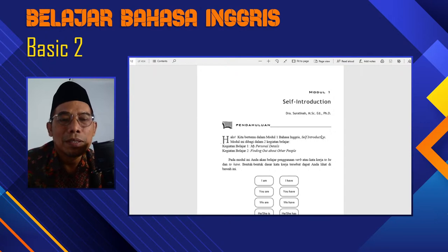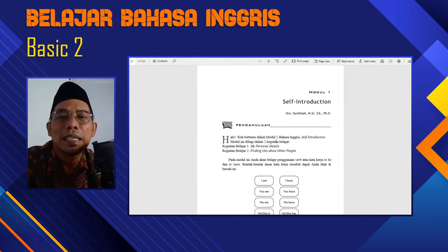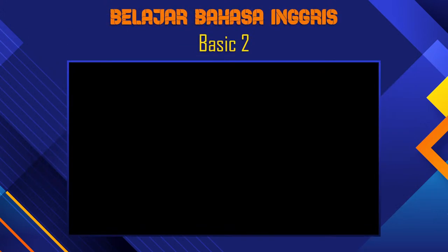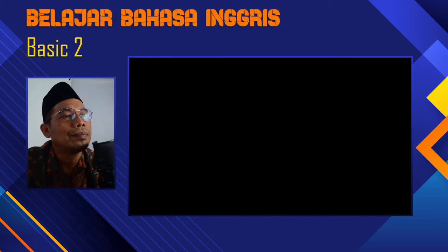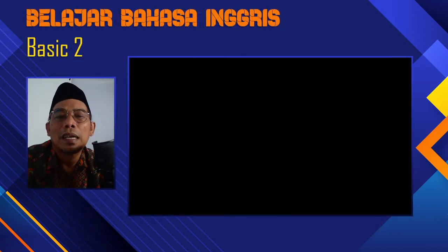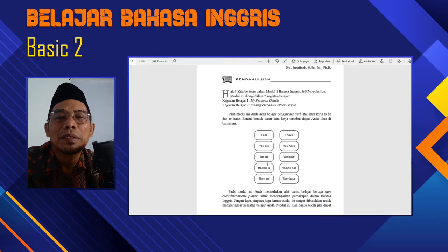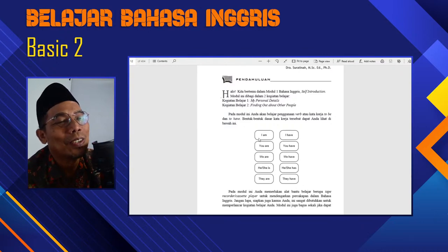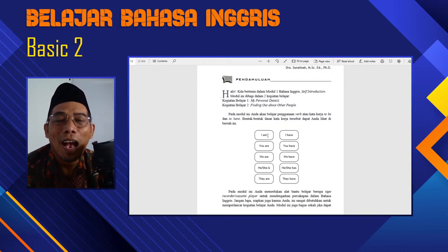Okay, now self-introduction — itu memperkenalkan diri sendiri. Jadi kita akan memperkenalkan diri sendiri. Apa yang penting di sini adalah bahwa kita harus paham tentang 'to be'. Nah, mungkin yang kita lakukan adalah 'to be' seperti yang tertera pada buku kita. Ada 'A', 'U', 'D', 'W'.